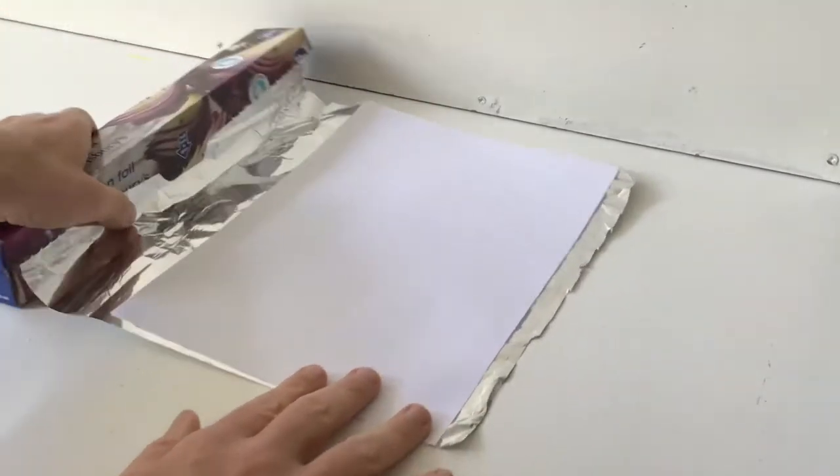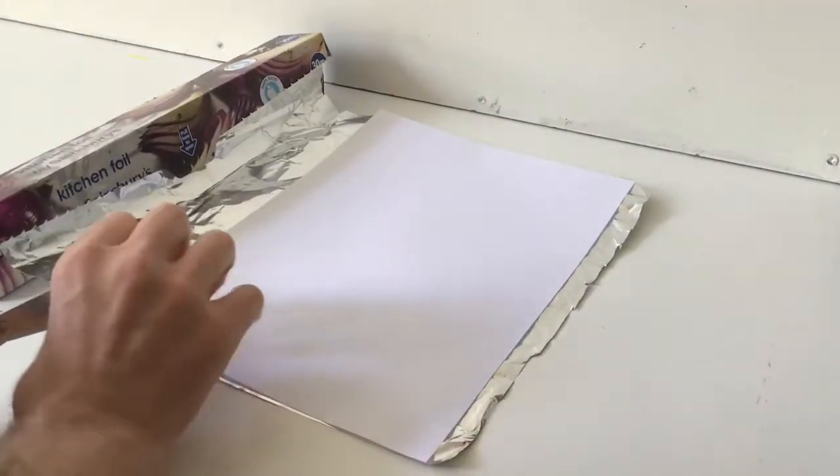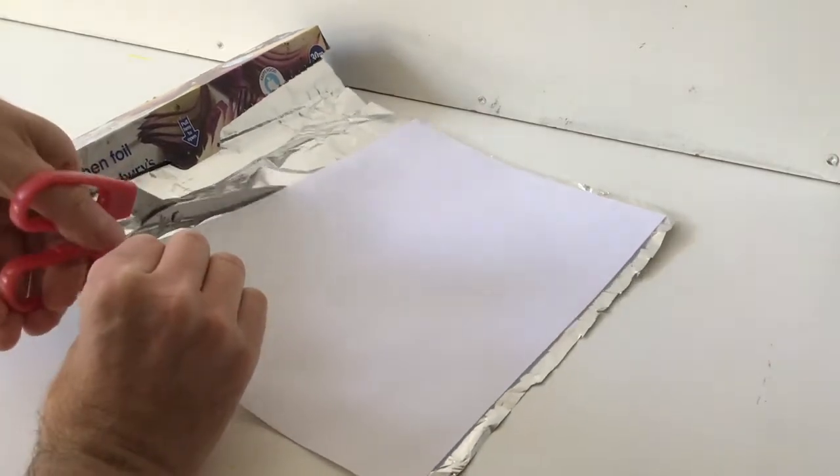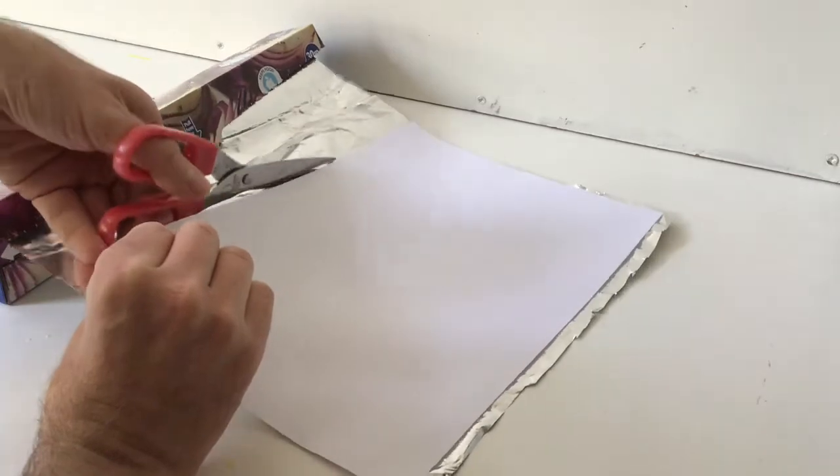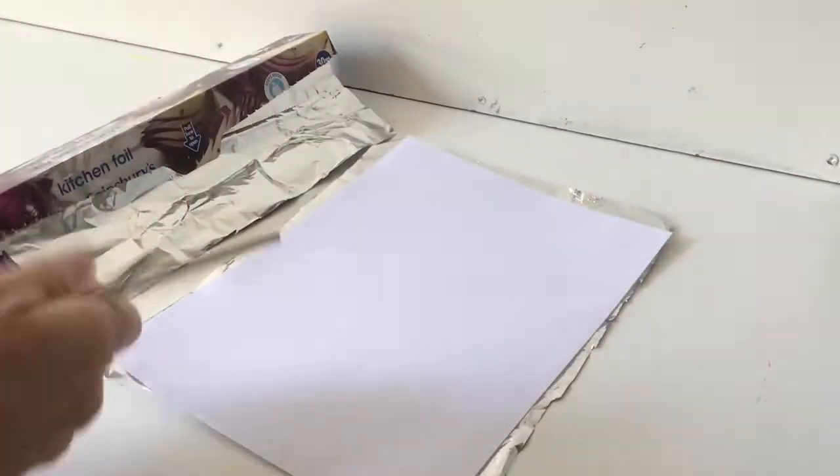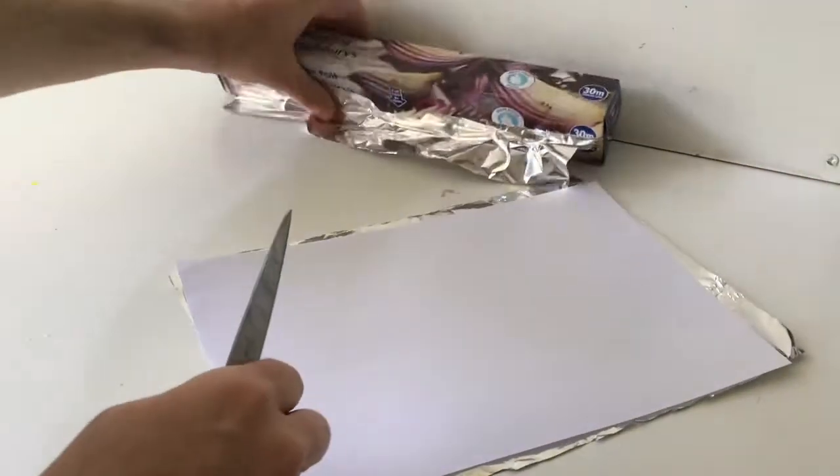So you need a piece of tin foil about the size of a piece of A4 paper, but you could experiment once you've made one. Make some larger ones, make some smaller ones, see which size works best for you, but A4 is a good size to start with.